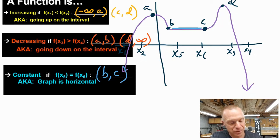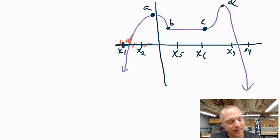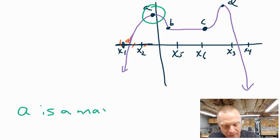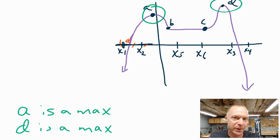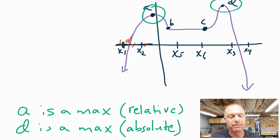This function also has some special points — the points where these intervals are changing. We would describe them as maximums and minimums. Looking at point A, you should conclude that point A is a high point on the graph, so point A is a maximum. So is point D — it's a high point on the graph. One of these points is absolutely the highest point, and point D would get that classification — it's absolutely the highest point on the graph. Point A is just a relative maximum, meaning that in its neighborhood it's a high point, but as we look around we see point D being actually higher.